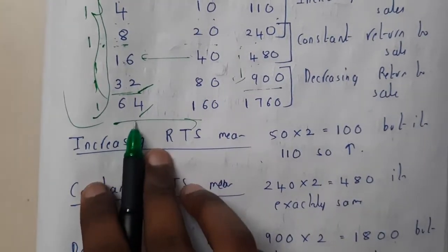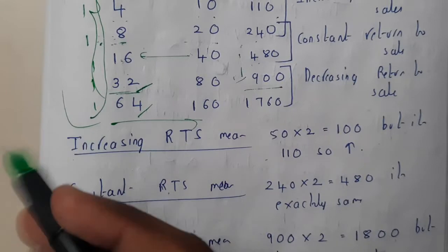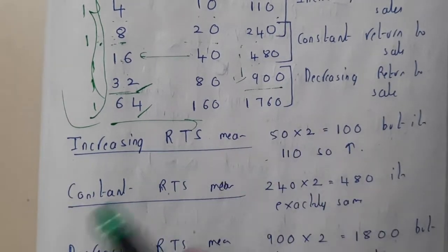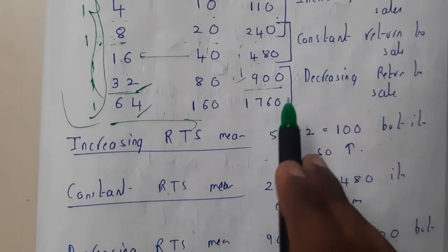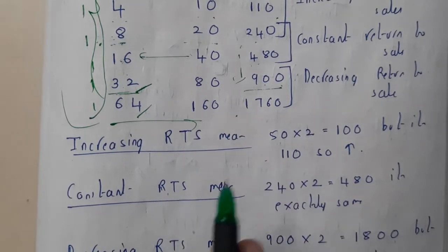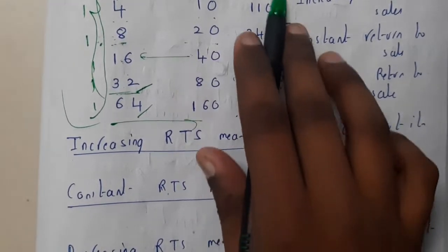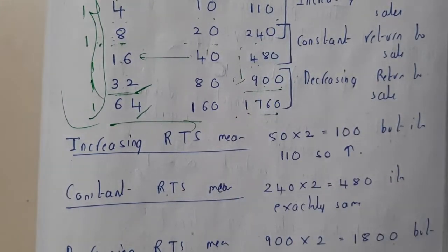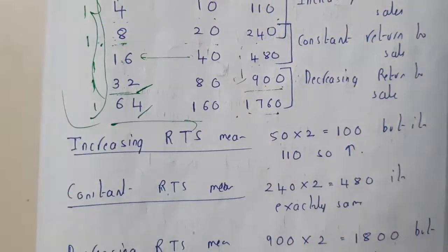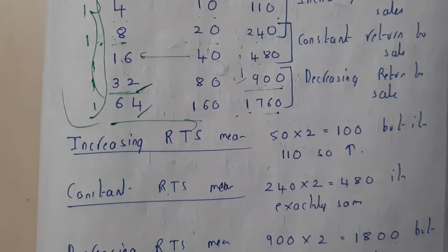If you make 64 members, 64 labors, it becomes really tough with no space for them to work properly. 900 times 2 should become 1800, but it became 1760. Initially it incremented, at middle it became constant, after it started decrementing.